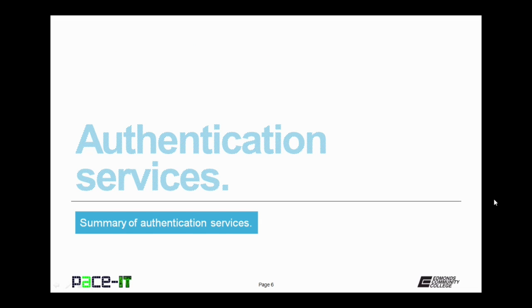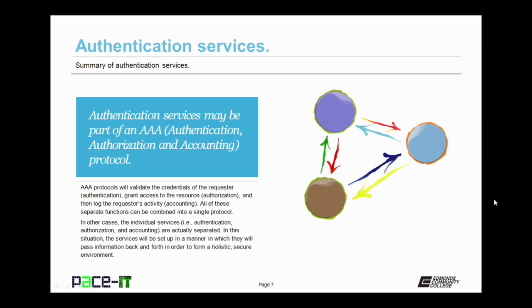Authentication services may be part of a AAA protocol. AAA stands for authentication, authorization, and accounting. AAA protocols will validate the credentials of the requester — that's authentication. They will then grant access to resources — that's authorization — and then log the requester's activity, as in what they do. That's the accounting service.